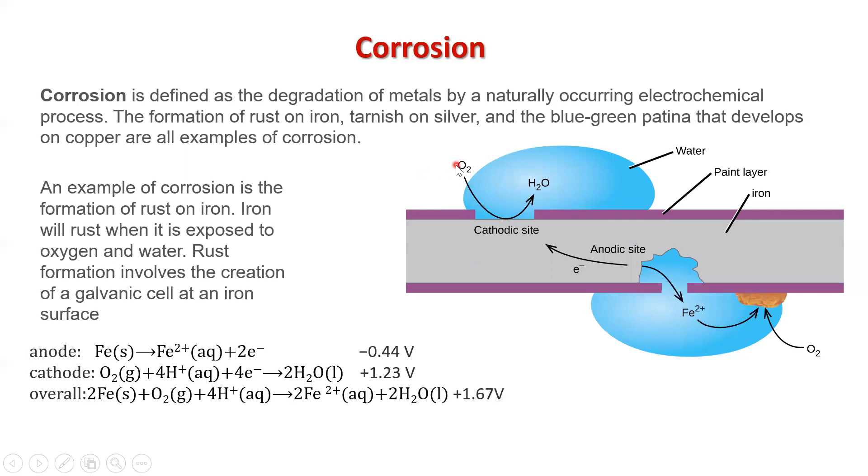The oxygen is going to go through a reduction reaction. The iron is going to go through an oxidation reaction. The iron ions will then react with the water and produce rust, iron oxide. And that's a positive voltage, which tells us that this process is a spontaneous process. Iron corrodes spontaneously. It's an example of a redox reaction.